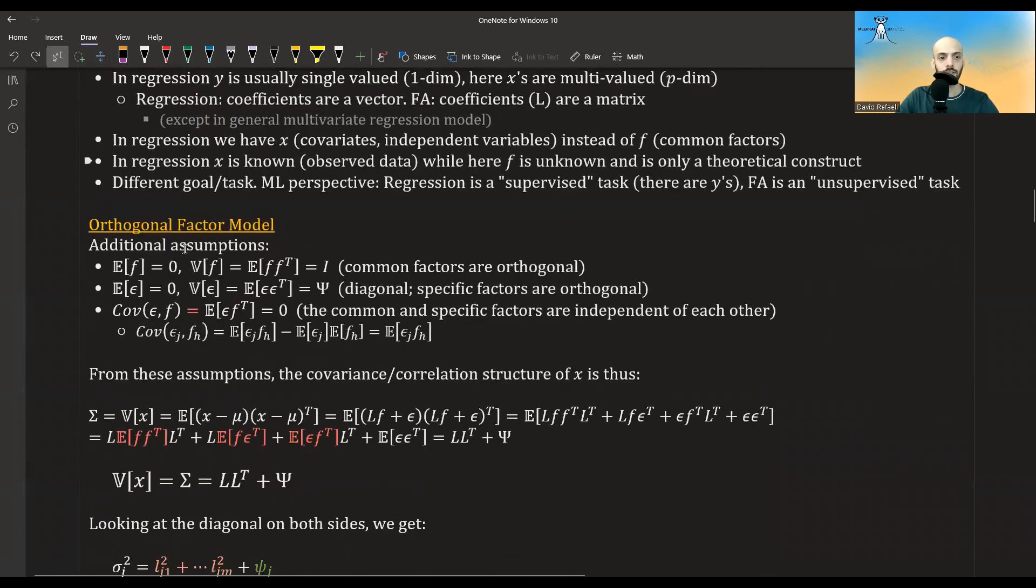The most simple factor analysis model is the orthogonal model, and it makes some additional assumptions. So it makes the assumptions that the mean of f, the mean of all the common factors are zero, and the variance of f, the variance of the common factors, these latent variables, is the identity matrix, meaning that the common factors are orthogonal. There is no correlation between the common factors.